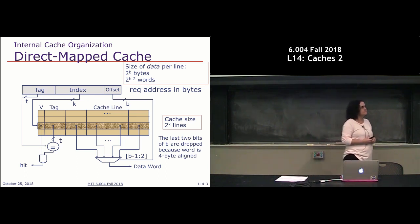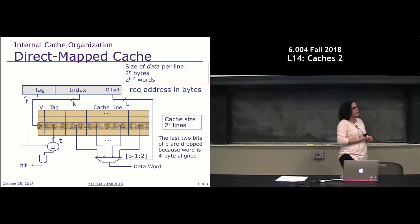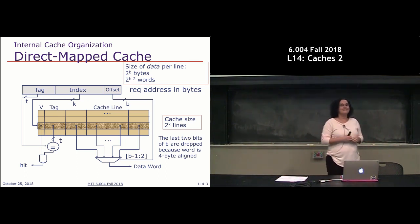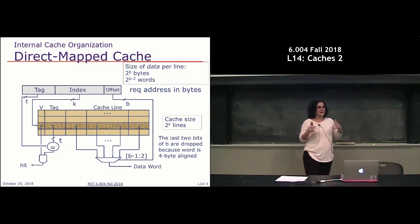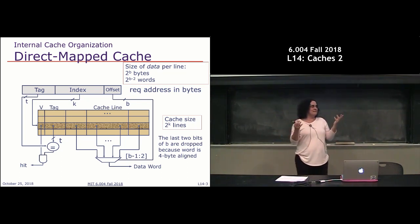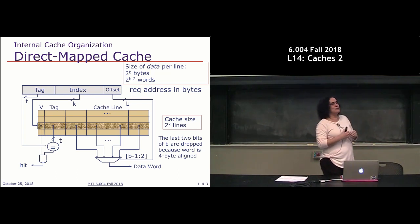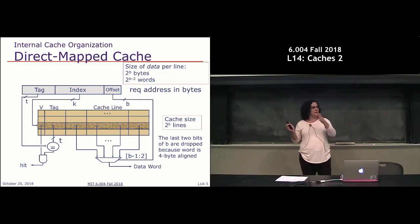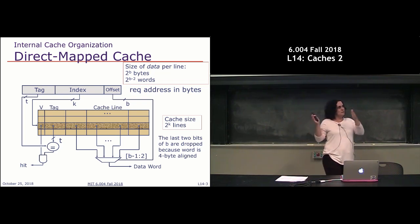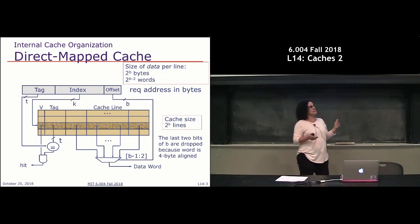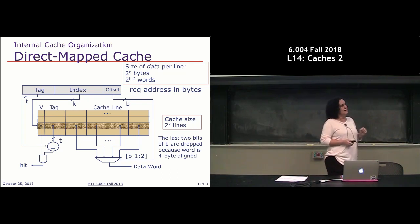The bottom two bits are lumped into what we call the offset. They're really just for word alignment, always. They change our address from a byte address to a word address. The rest of the offset bits are the ones used to select a word from within the line.